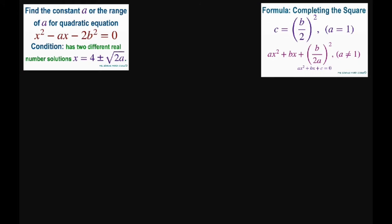So basically what we're going to do is complete the square for this and we have this condition as x equals 4 plus or minus square root of 2a. So what we're looking for is to get a solution as x equals some p plus or minus square root of q and find these here.